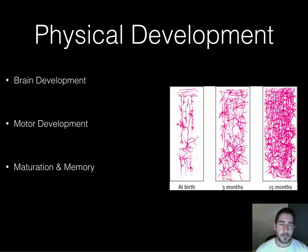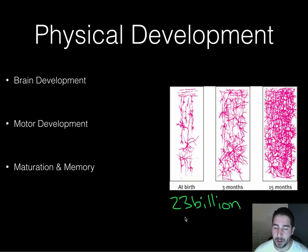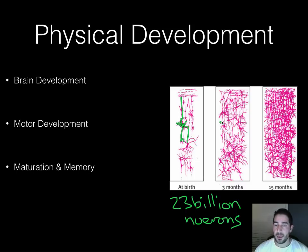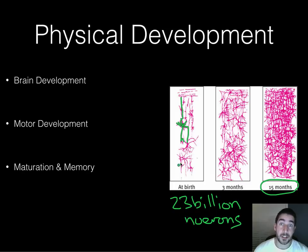Moving on to physical development — here's a picture of brain development. At birth you have about 23 billion neurons, but those neurons don't have a whole lot of connections. Remember, every time you learn something new you're making a neural connection. At about three months it's looking a lot better. And by 15 months things are going crazy up there in your brain. The brain develops very quickly, taking in all this information at a super fast rate and just absorbing and using it.